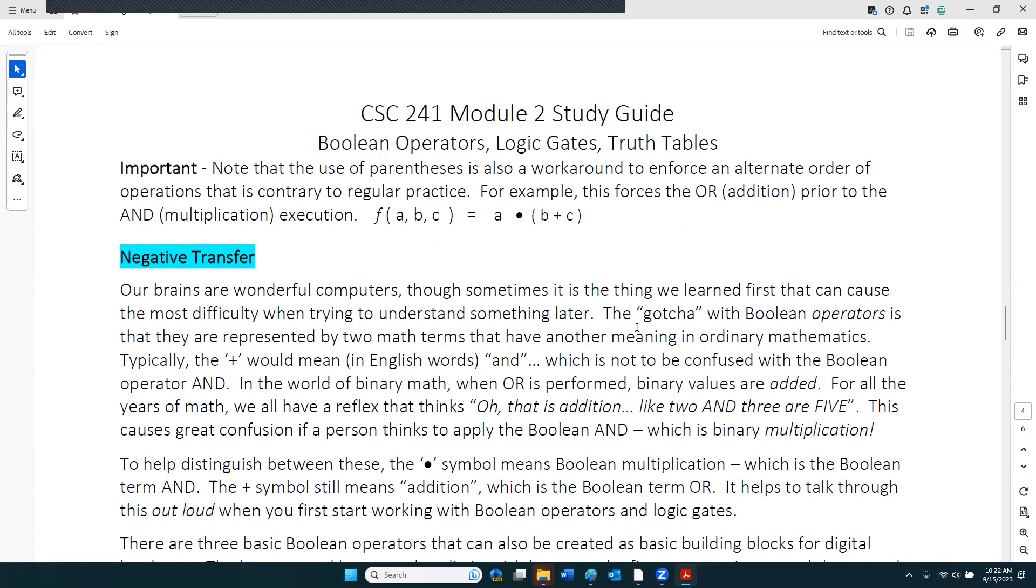Boolean operators and logic gates - the Boolean operator is the software version or the programming version, and logic gates are the hardware version of the same thing. There are three basic logic gates, three basic Boolean operators, whether you're dealing with software or hardware. Whenever you see logic gates, think hardware. Whenever you see Boolean operators, think programming or software. It's the same thing. There's three of them: AND, OR, with NOT in the mix.